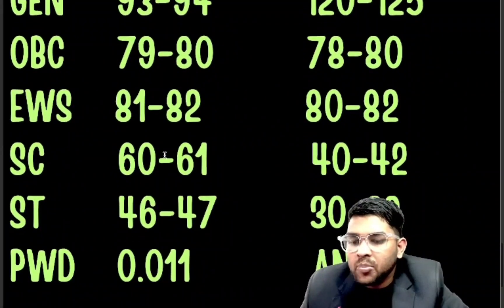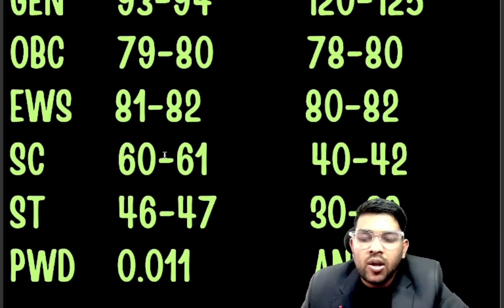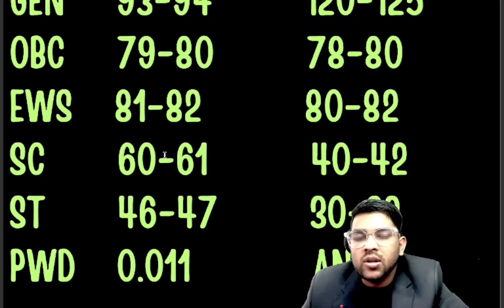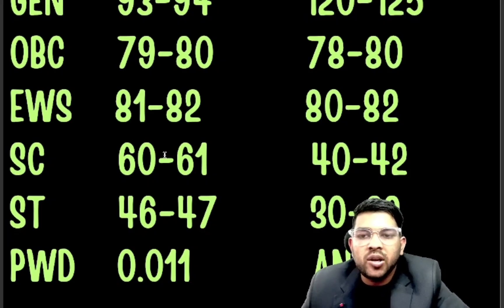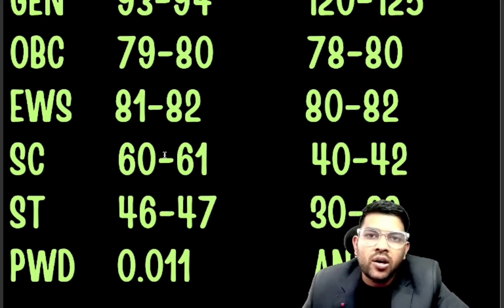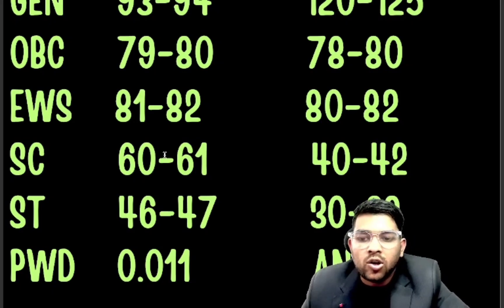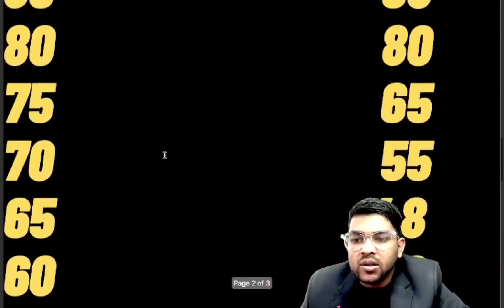For SC category, 40 to 42 marks is required. For ST, 32 marks. For PwD, you just need to reach the exam center — that's enough, because once you reach the center you are eligible for JEE Advanced. You can watch my previous video to get the explanation of why the cutoff is very low for the PwD category.